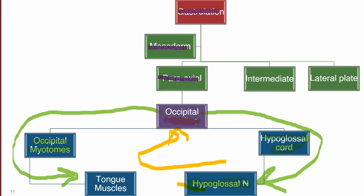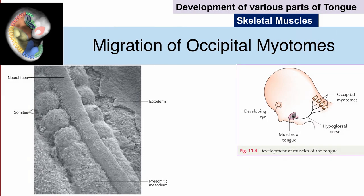All motor innervation of the tongue — not sensory innervation or special sensation — is by the hypoglossal nerve. For example, the movement of the tongue during speaking involves the motor innervation of the tongue by the hypoglossal nerve, which plays a crucial role. We now need to see how these occipital myotomes give rise to the skeletal muscles of the tongue.